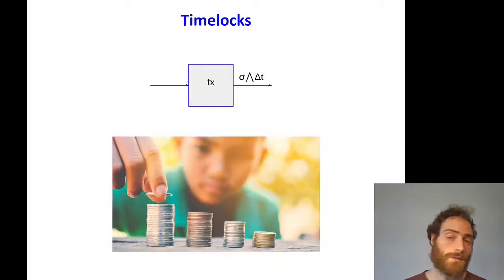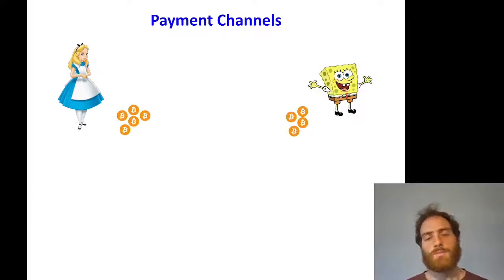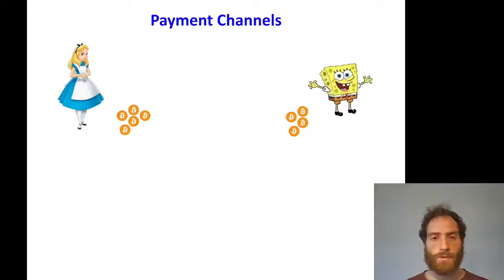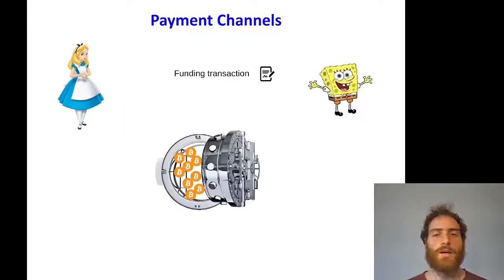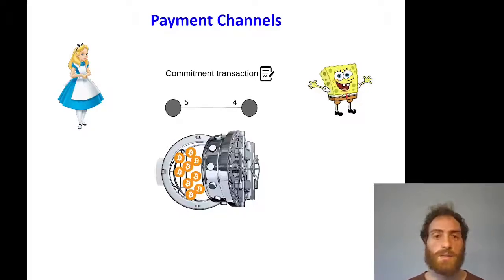To go into a more realistic application of time-locks, let's introduce payment channels. Alice and Bob have some coins on-chain and they know that in the future they will be transacting a lot. Each transaction on-chain costs a lot of money in fees and is very slow to be confirmed — it takes more or less an hour. So what they do is open a channel by creating together a funding transaction which takes all their money and puts them into one output, like a joint account. Each party holds on to a commitment transaction which they can unilaterally use to close the channel and take their right share of the money.